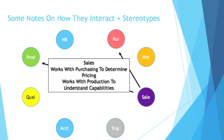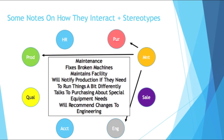Then we have sales. Sales will work with purchasing to determine pricing, and they'll work with production to understand capabilities. You can't sell something if you don't know how much of it you can make, or even if you can make it. And you definitely shouldn't sell something if you don't know how to price it appropriately — you need to make a profit.